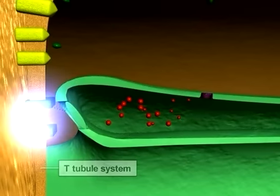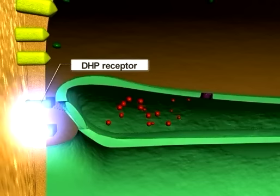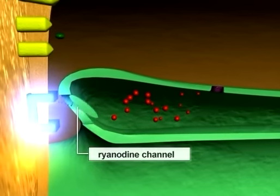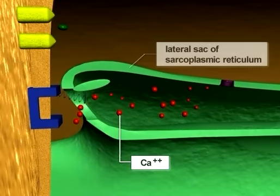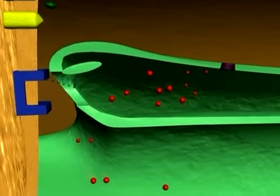As the action potential encounters DHP receptors in the T-tubules, it causes opening of the ryanodine calcium channels of the lateral sacs, thus allowing calcium ions to diffuse out of the lateral sacs and into the region of the myofibrils.